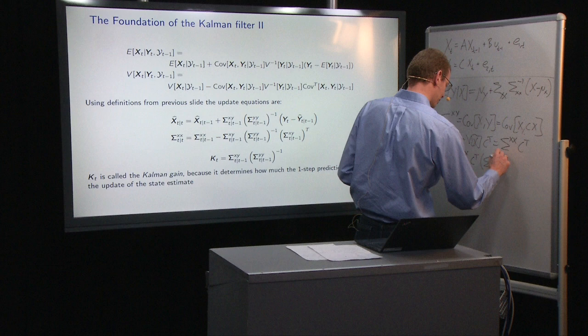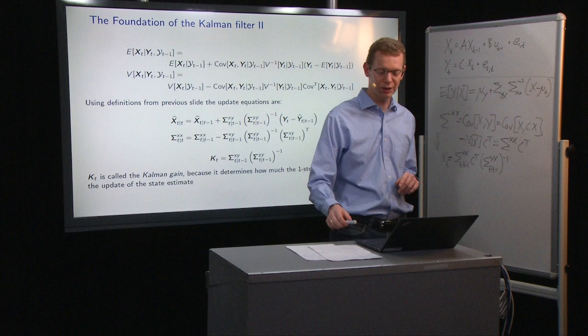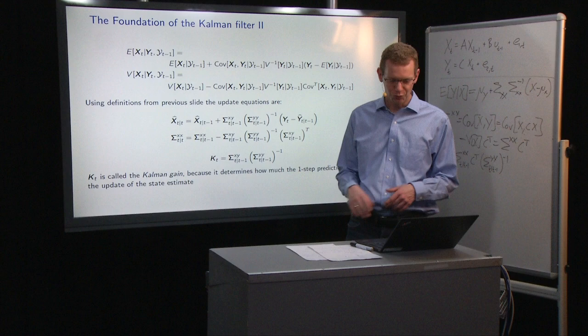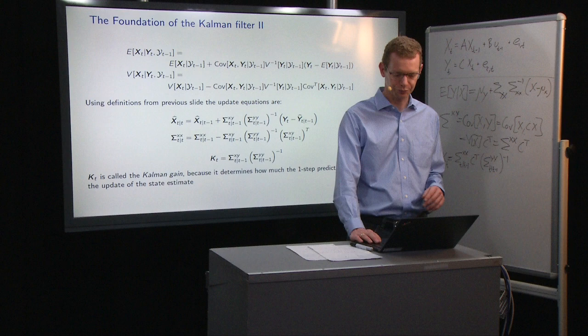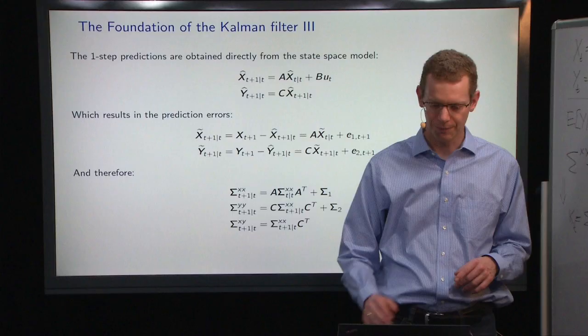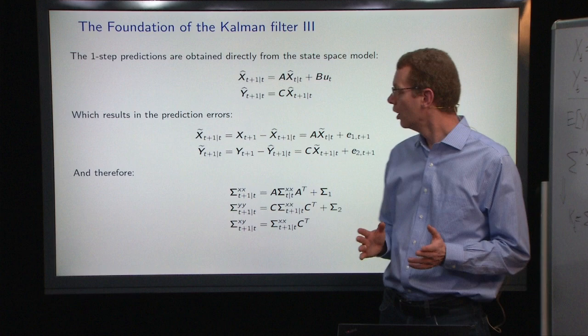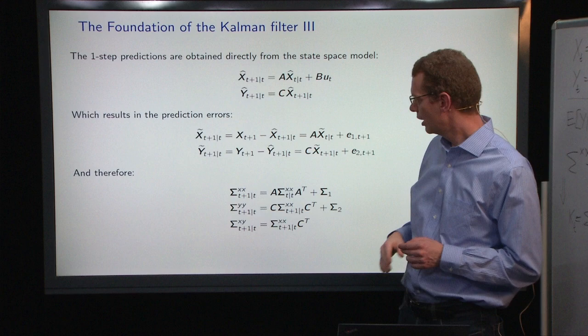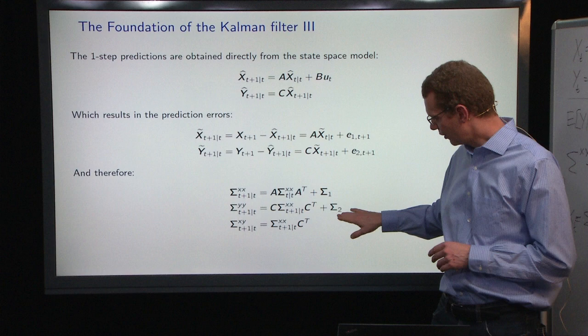The Kalman gain is basically saying how much does the one-step prediction error influence the update going from T given T minus one to T given T. The one-step predictions we talked about already — those are easy. And when we look at the prediction errors we also get the covariance structures we looked at just before. Here again is the covariance between X and Y, which we discussed already when we postulated the Kalman filter.